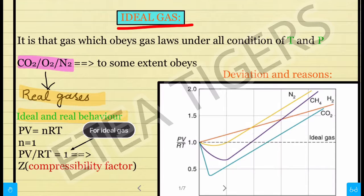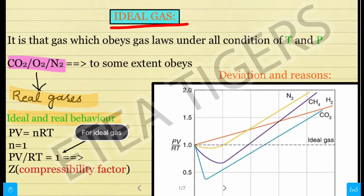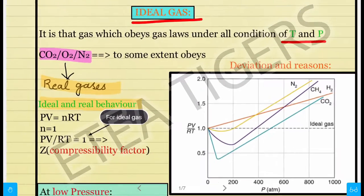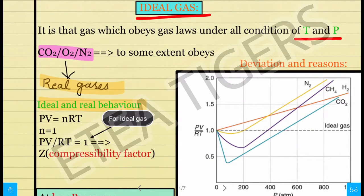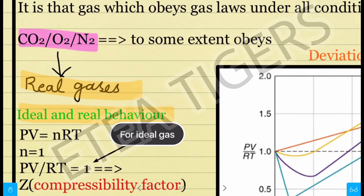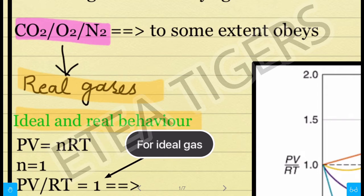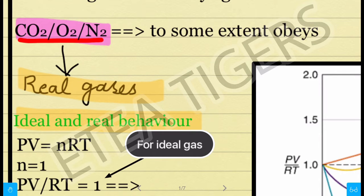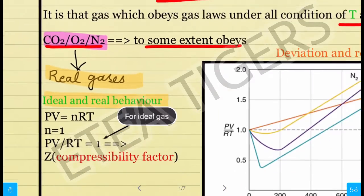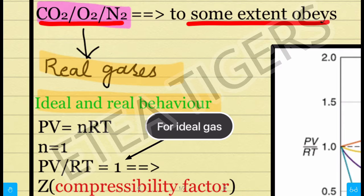The ideal gas is that gas which obeys gas laws under all conditions of temperature and pressure. I'll tell you about carbon dioxide, oxygen and nitrogen. We'll see the graph — they obey to some extent. Carbon dioxide is what we call a real gas.